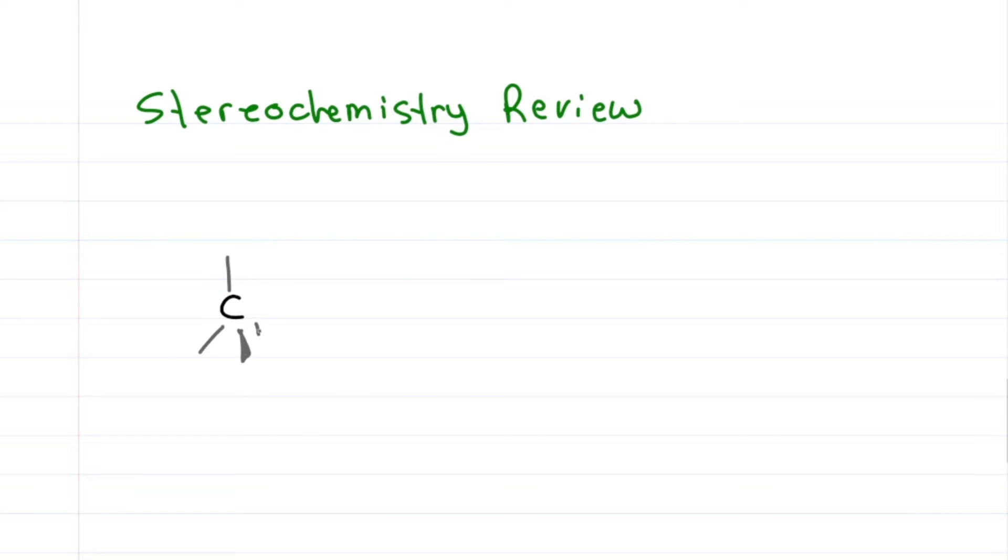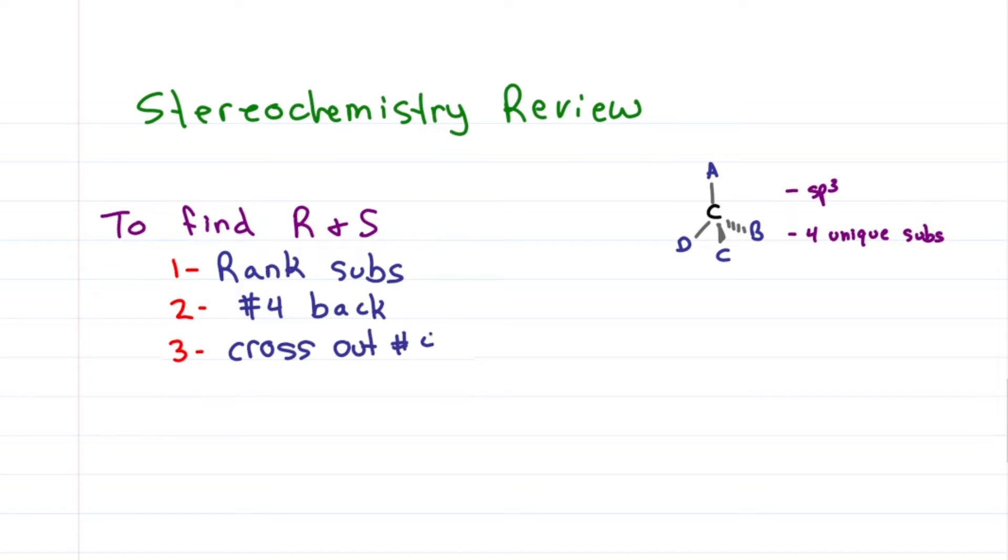A chiral atom is sp3 hybridized with four unique substituents. To find the R and S: one, rank your substituents; two, make sure number four is in the back; three, cross out number four; and four, trace an arc from one to two to three. If the top of the arc goes to the right it's R, if the top doesn't go to the right it's not R, it's S.